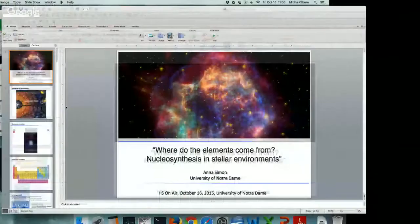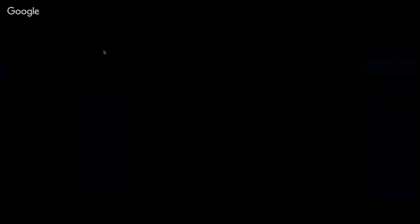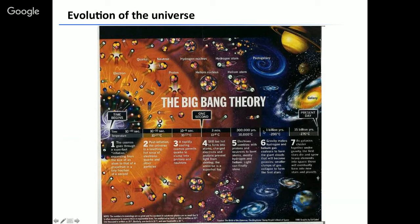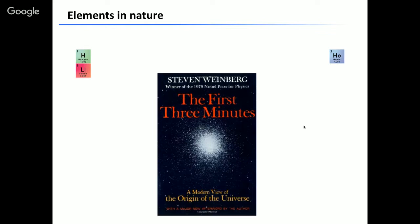If we think about the evolution of our universe that started with a Big Bang, within the first one second after the Big Bang, protons and neutrons were created, and it took another three minutes to produce hydrogen and helium nuclei. Then, after the universe kept cooling down, within the next 300,000 years, hydrogen atoms and helium atoms formed. During the first three minutes, only three elements were created: hydrogen, helium, and lithium.